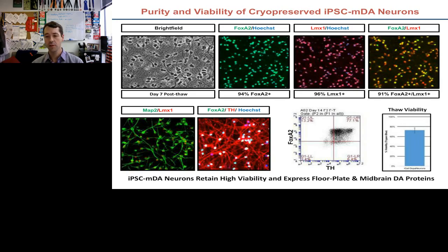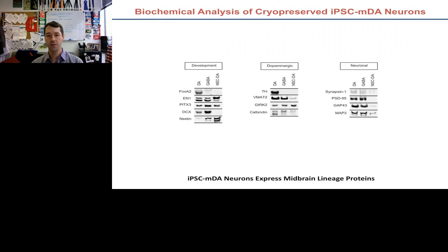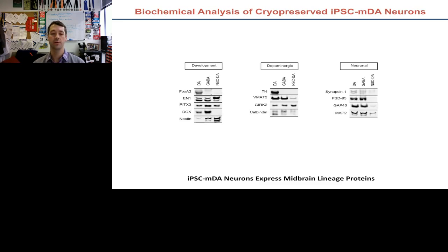Western blot analysis further validates the protein expression profile. The DA population — the iCell DOPA neurons — are FOXA2- and TH-positive, along with other midbrain markers VMAT2 and GRP2, and they also express synaptic proteins. By comparison, the GABAergic iCell neuron line (nearly 80% GABAergic) and fetal cortical neural stem cells grown in dopaminergic media do not show this FOXA2 and TH positivity. So both gene expression and protein expression confirm we have the right profile in these cells.